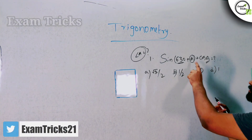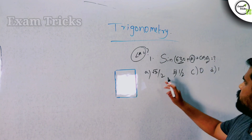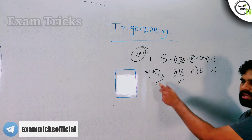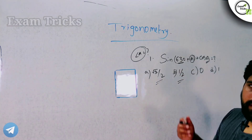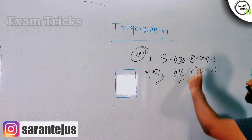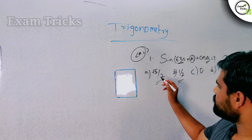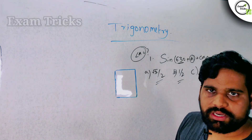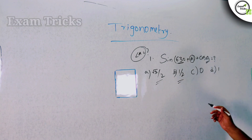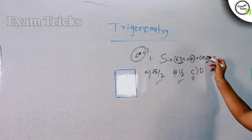We can try example values — for instance, root 3 by 2 or 1 by 2. But when we substitute those, the result comes out to 0. So the two terms cancel each other.